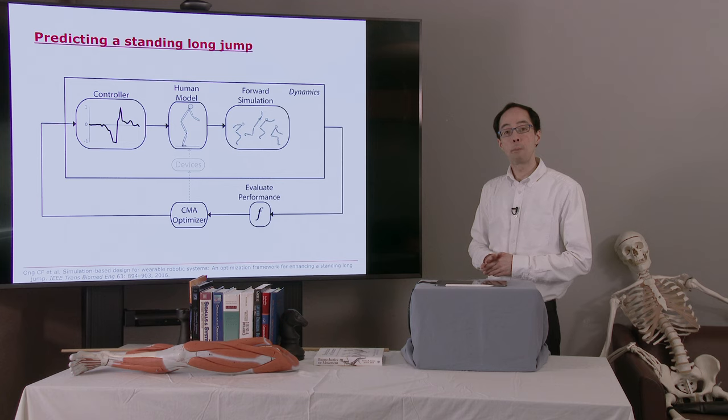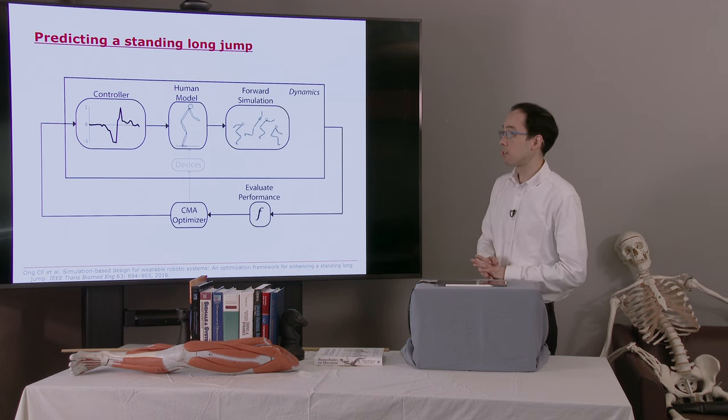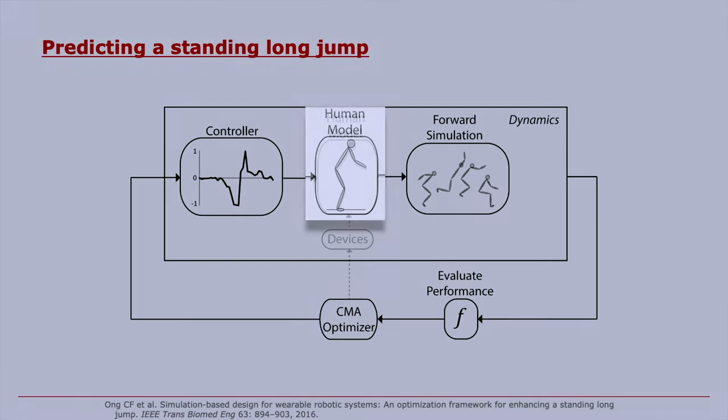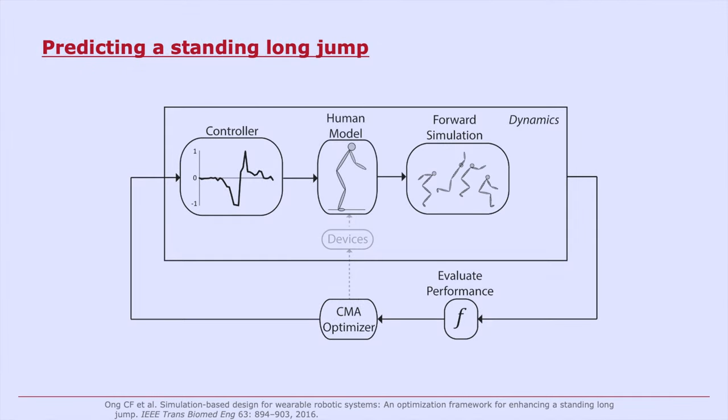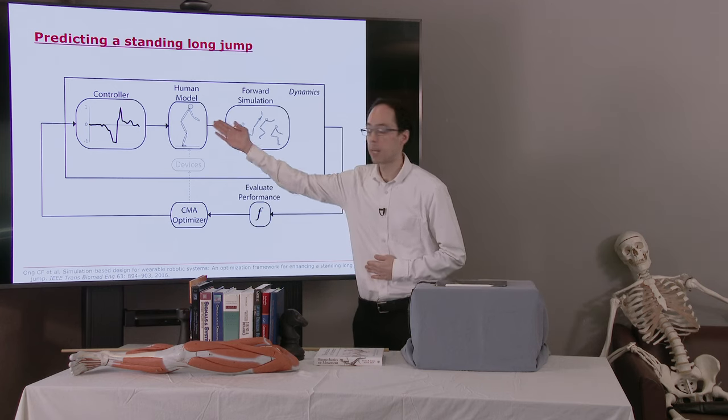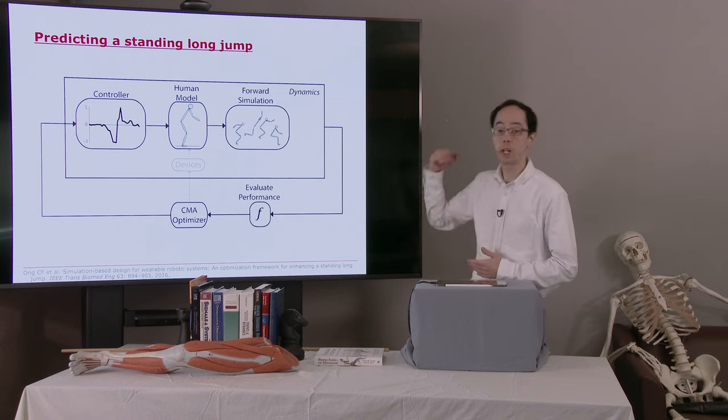So let's look at an example of using dynamic optimization to learn something about how humans move. This is work from Carmichael Ong, who was trying to predict how a model could jump the maximum distance. So here's the human-like model. The model is planar, and there are four motors that represent the action of the muscles across those joints. We have one at the ankle, one at the knee, one at the hip, and one at the shoulder.